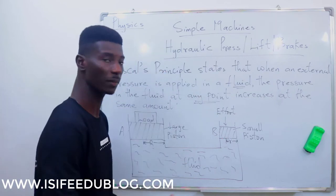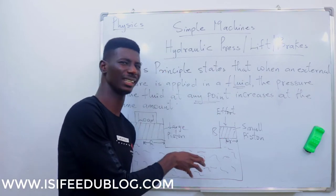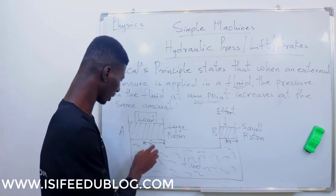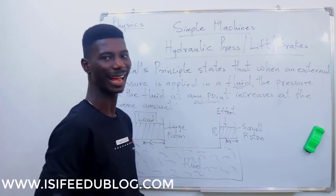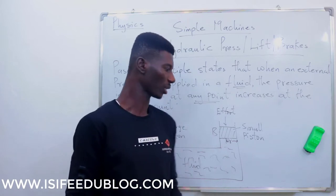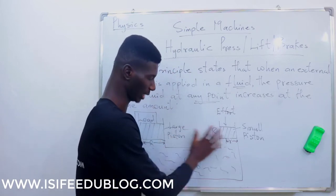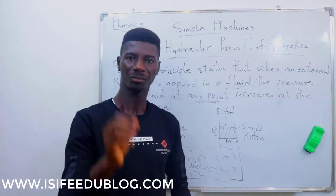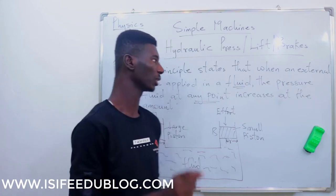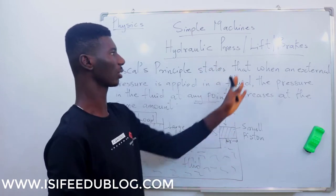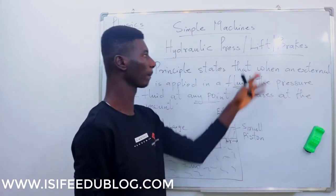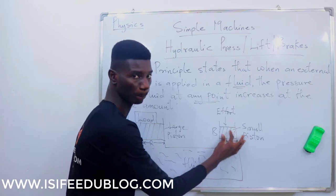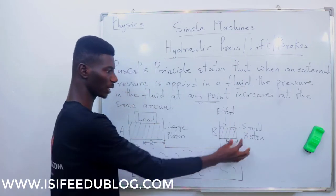Since the same amount of pressure acts throughout, the mechanical advantage of a hydraulic press and the velocity ratio are always equal. This is important — sometimes exam questions ask which machine has equal mechanical advantage and velocity ratio, and the answer is the hydraulic press, also called hydraulic piston, lift, or brakes. The pressure at the smaller piston is equal to the pressure at the larger piston.